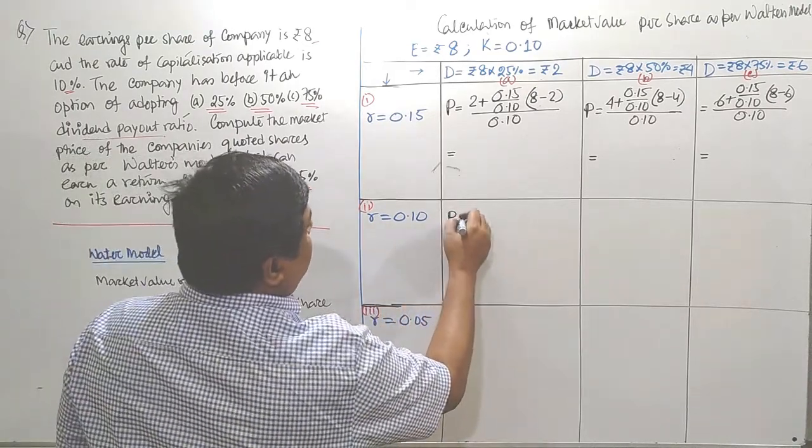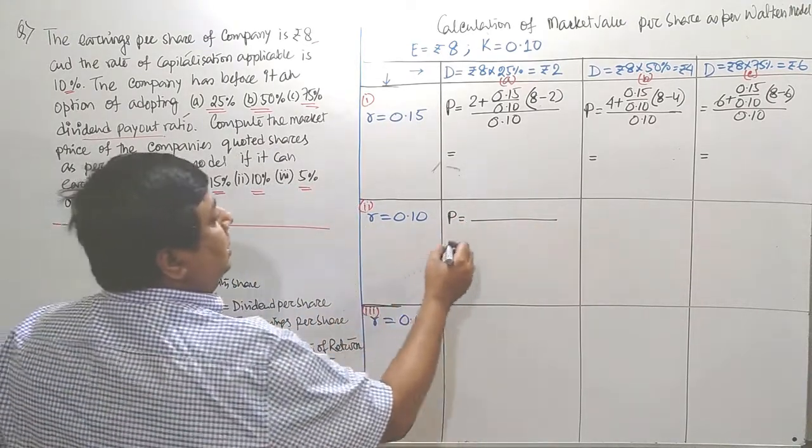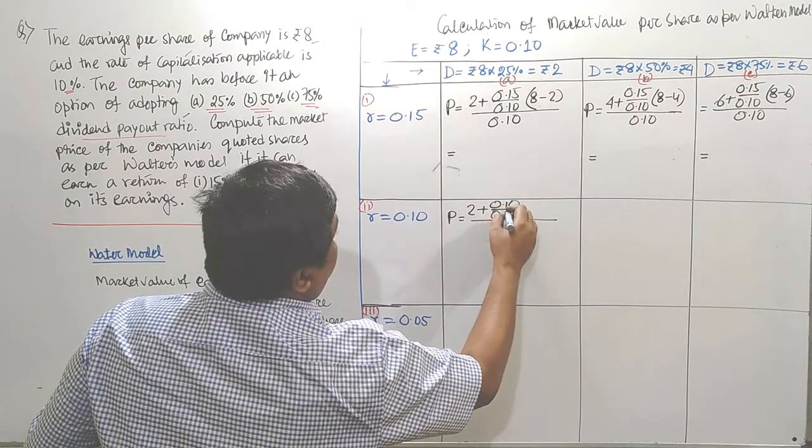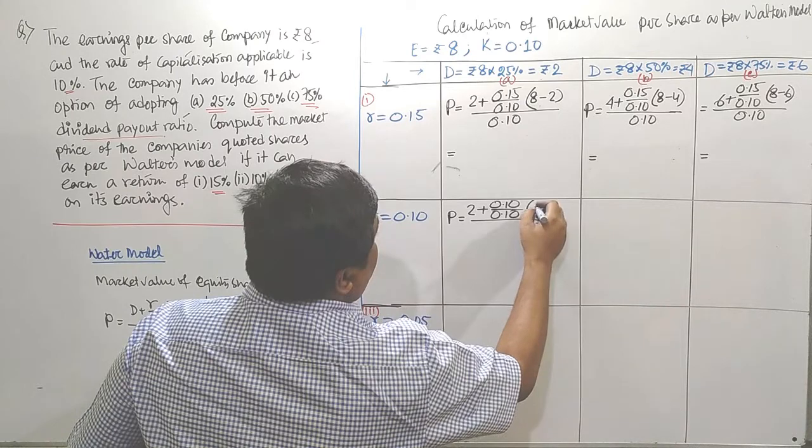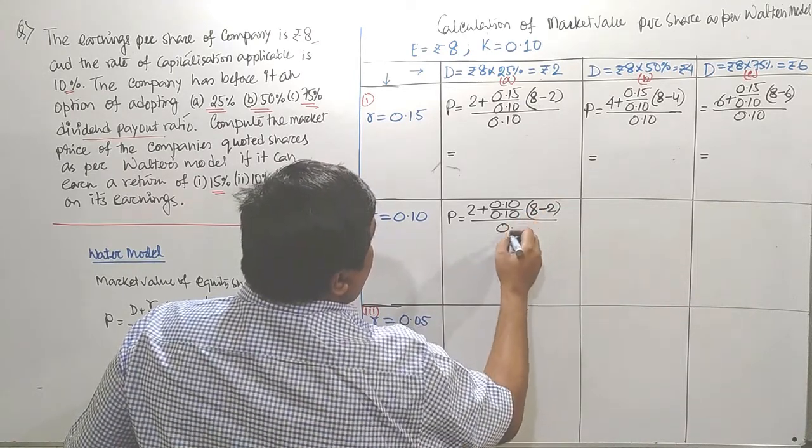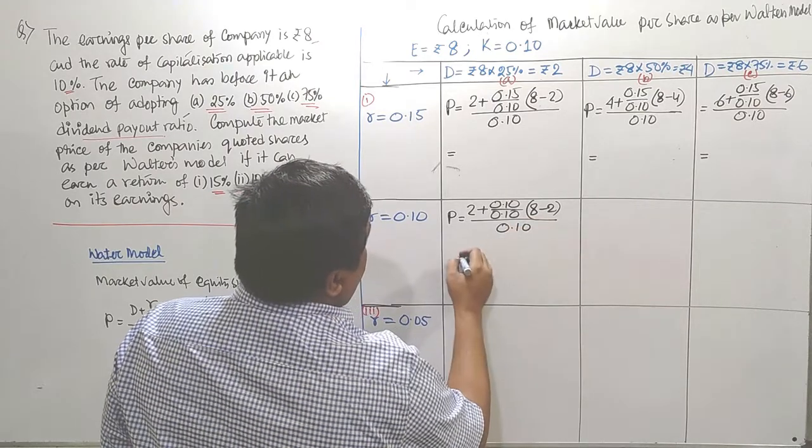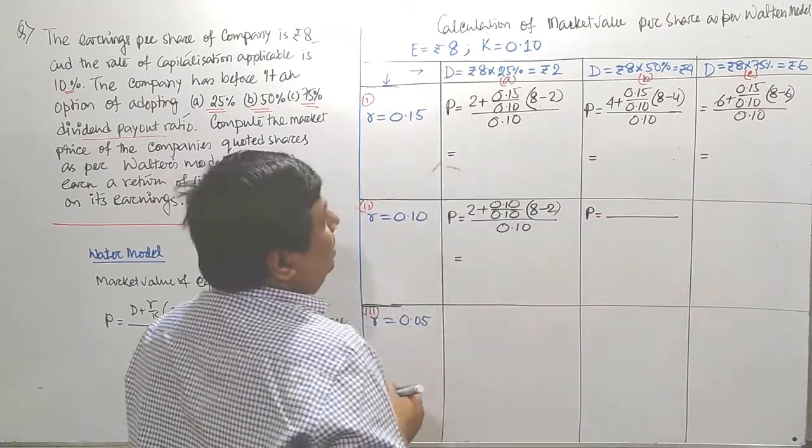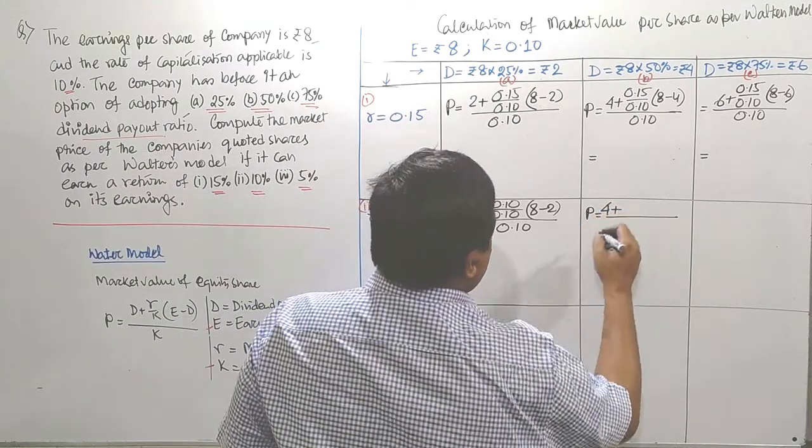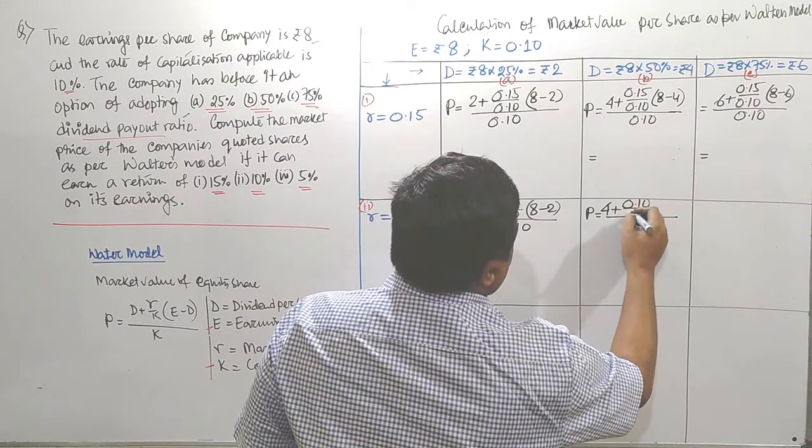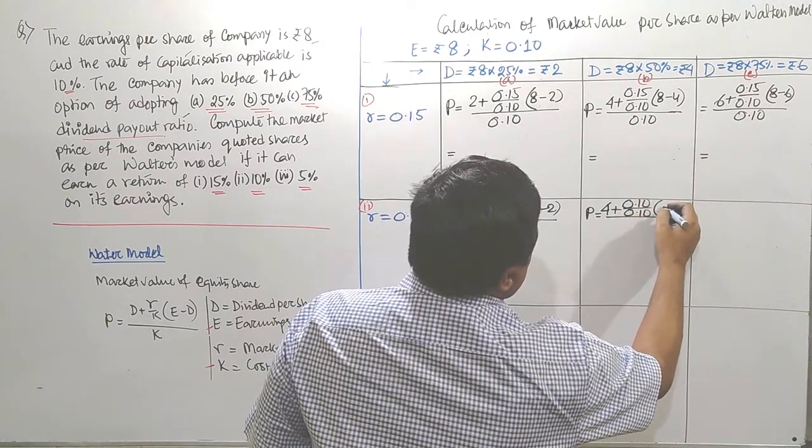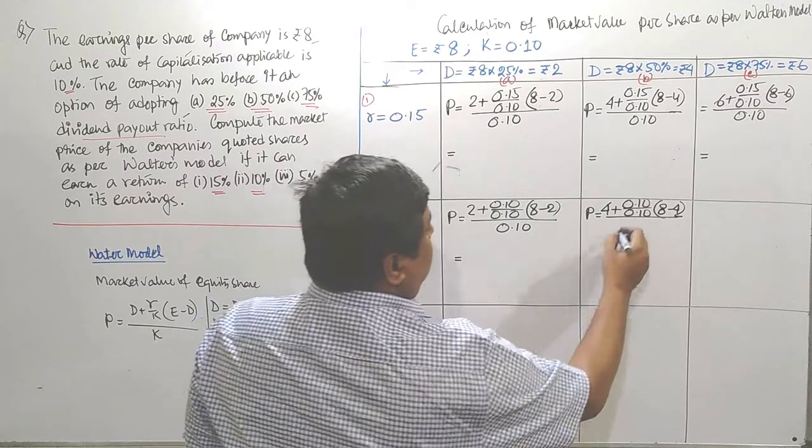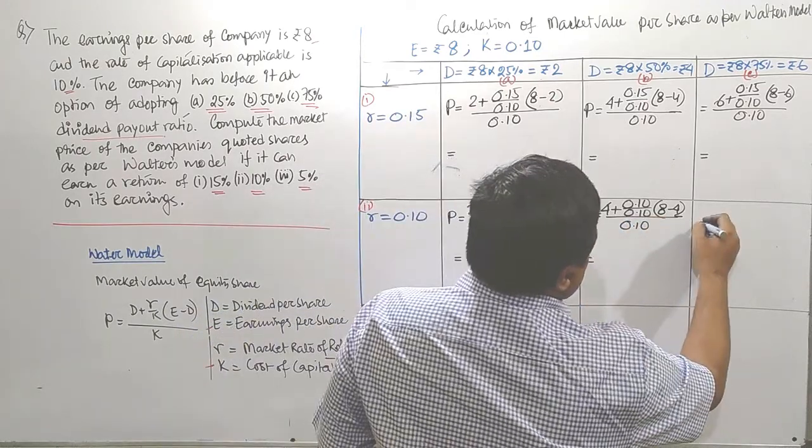In next row, first column, P equals to, here D is again 2, plus R by K, R is 0.10, K is also 0.10, within bracket E minus D, 8 by 2, divided by 0.10. Row 2, column 2, P equals to D is 4, plus R by K, R is 0.10, K is also 0.10, E minus D, E is 8 and D is 4, all divided by K, 0.10.